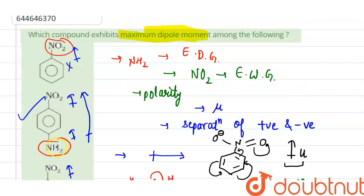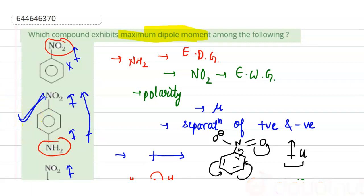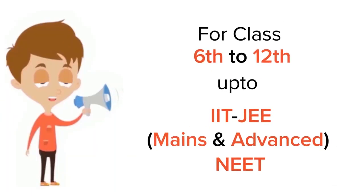So compound 2, para-nitroaniline, exhibits the maximum dipole moment. Option 2 is the correct answer to this question.